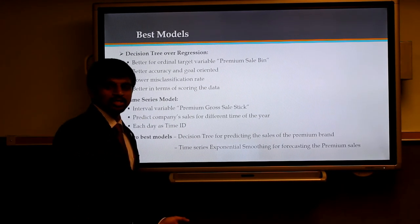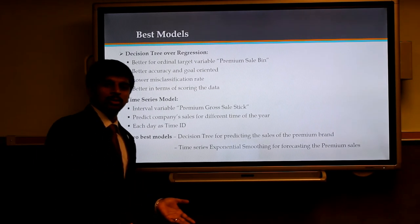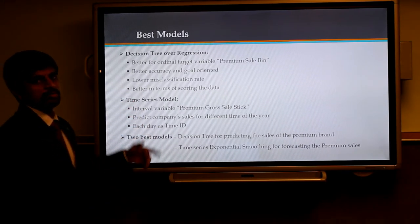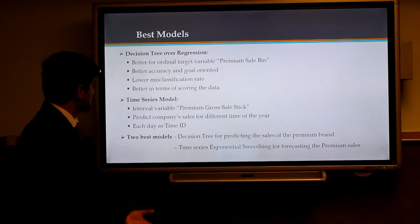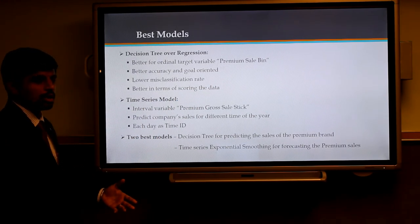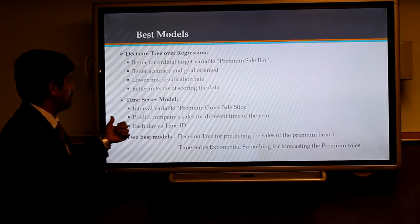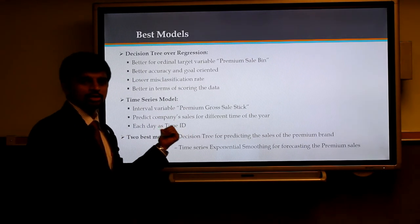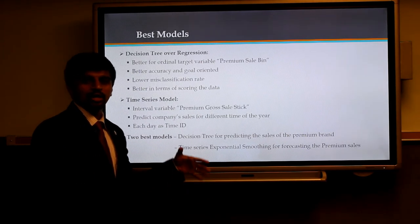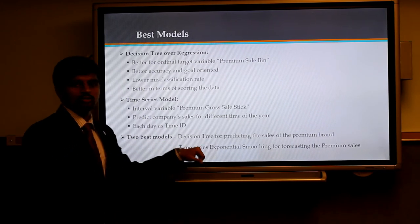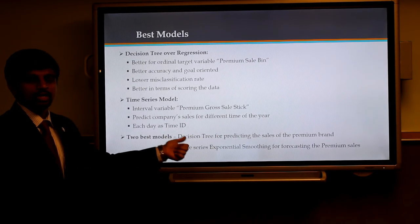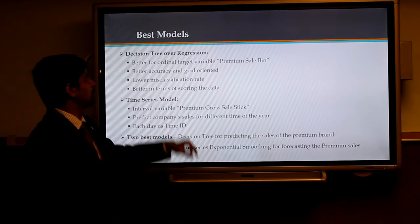With respect to talking about the best model that we came up with, in terms of decision tree over regression, we chose decision tree because of the lowest misclassification rate. It has better accuracy and is also goal-oriented. In terms of scoring the data as we saw earlier, it is also better compared to regression model. Coming to the time series model, it is best in terms of the interval variable that we have, and we can have the time ID as each day as we saw from the graph to get better accuracy of the model. Two best models that we saw here were decision tree with respect to predicting the sales of the premium brands, and the time series model with respect to the premium gross sales data.